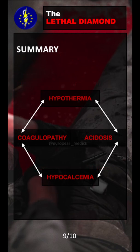So now we have discussed all the aspects of the lethal diamond — hypothermia, acidosis, hypocalcemia, and ultimately coagulopathy — and how these factors influence each other.